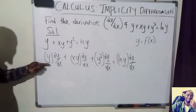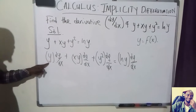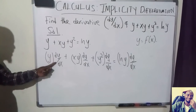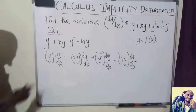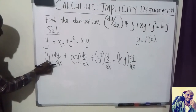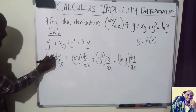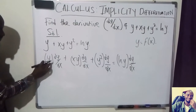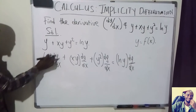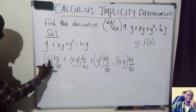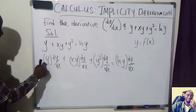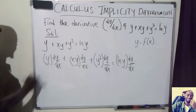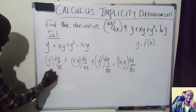Whenever you're finding dy over dx of y, you have to differentiate with respect to y, then attach dy over dx. So for this one, the derivative of y — look at the power, which is 1. So 1 multiplied by the coefficient gives 1, then reduce the power by 1: 1 minus 1 gives 0, so y to the power 0 gives 1. So here we're going to have 1.